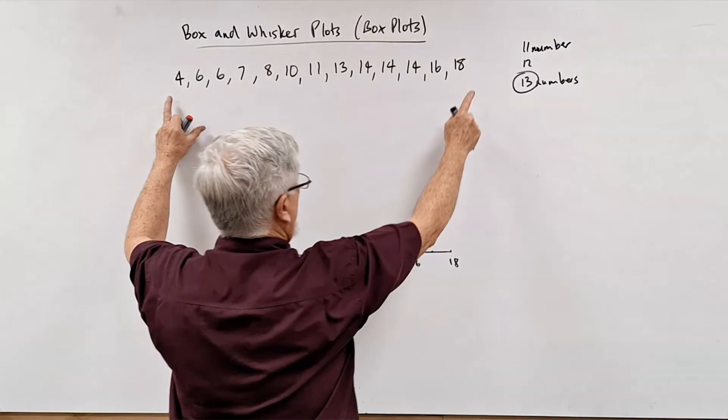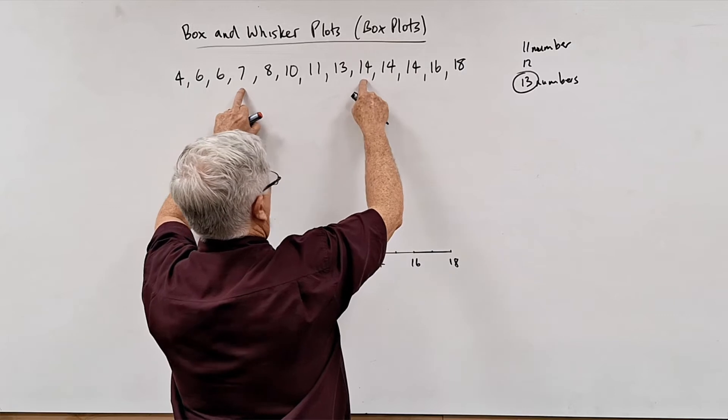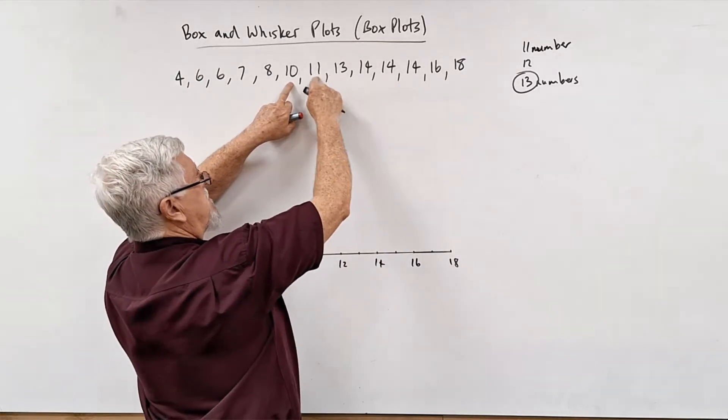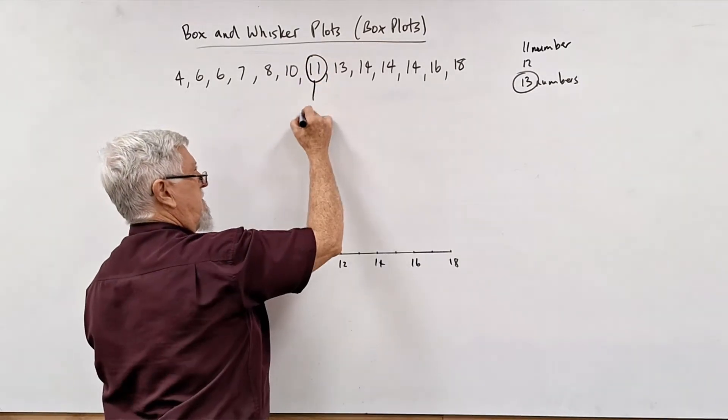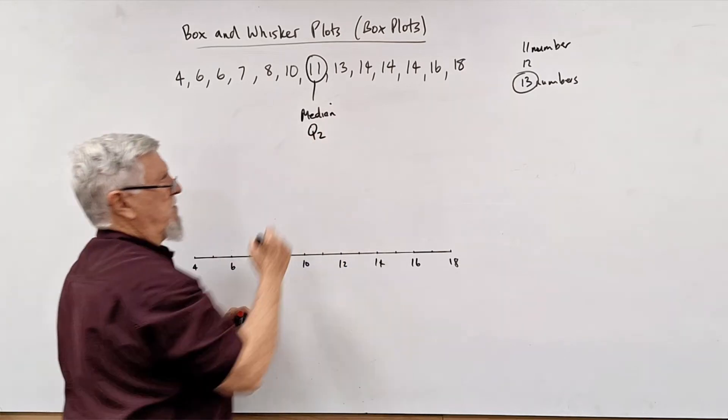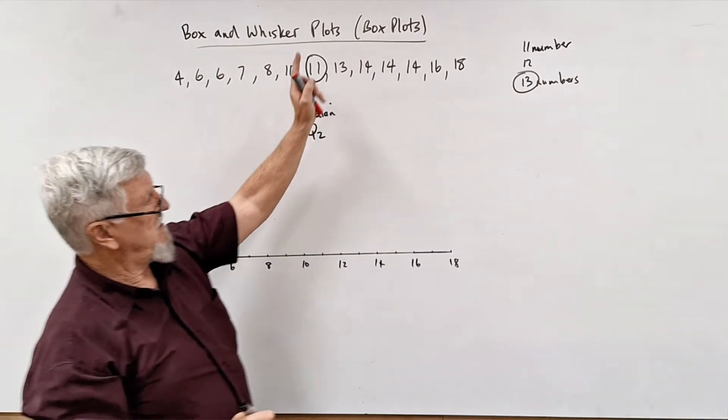I still say for a lot of the students, you're better off to go one, two, three, four, five, six. There's six numbers from each end, so there's your middle there. So that's your median, which a lot of people refer to as Q2. So it's the second quartile. First quarter, second quarter, third quarter, fourth quarter.